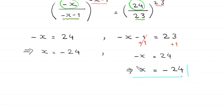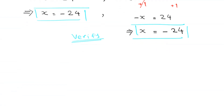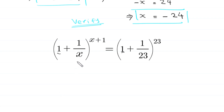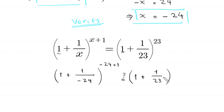This is the final value of x and the final answer of this equation: x equals negative 24. Now let us verify this value by putting it back into the original equation. We replace every x with negative 24: 1 plus 1 over negative 24, whole to the power negative 24 plus 1, should equal 1 plus 1 over 23, whole to the power 23.